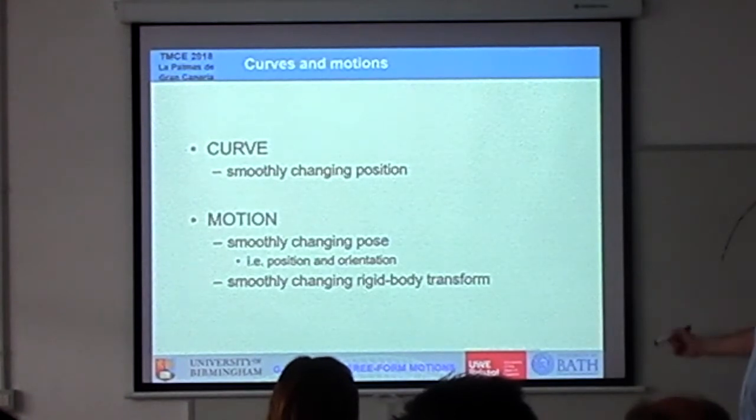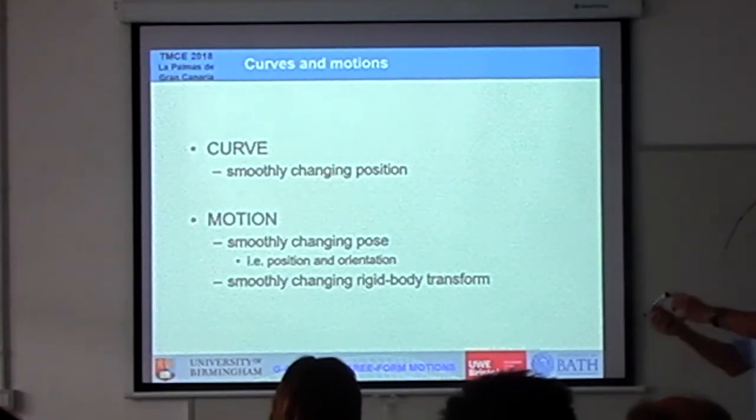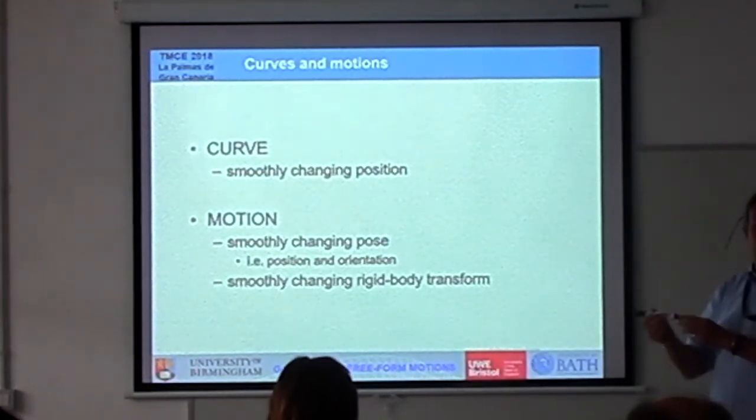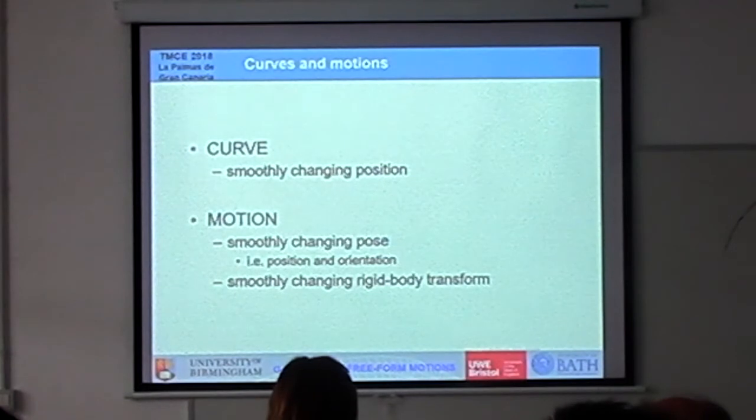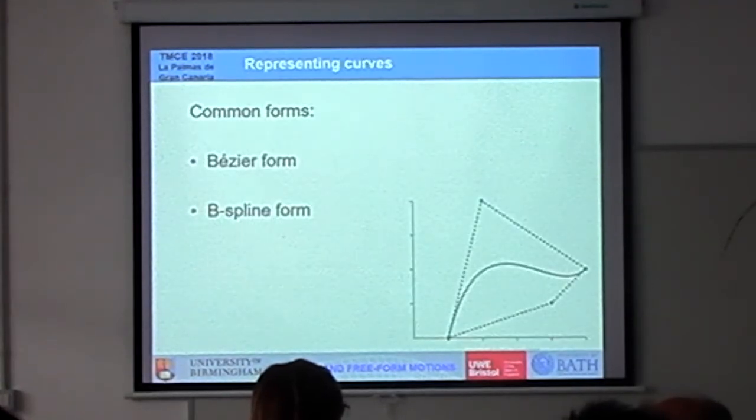So what we mean by the curve, it's a smooth changing of position. Whereas a motion, if you think about the cutting tool as a motion, is what we're thinking about as changing its position and orientation. Instead of thinking about where the end of the cutting tool sits, we're interested in where the whole cutting tool moves within the cutting environment. And by thinking about it as a motion, we get a smoother transition between where we want to go.